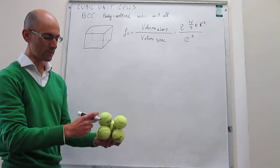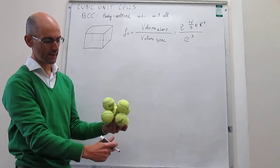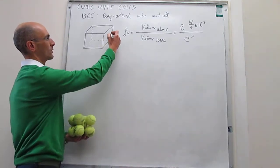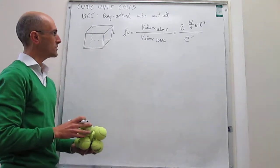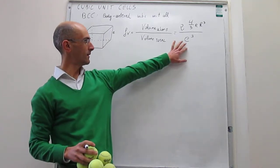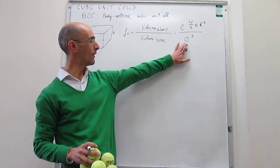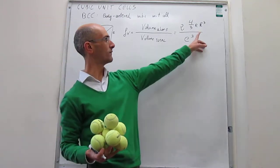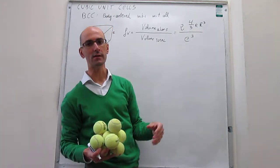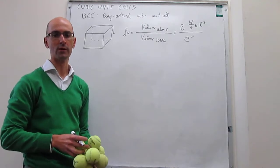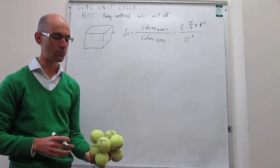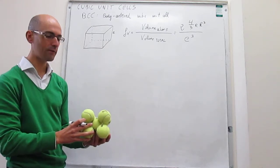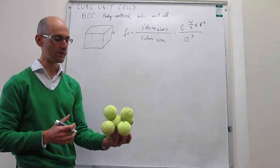The volume of the unit cell is the side length E cubed. However, we need to relate the side length of this cube to the radius of the atom so that we can cancel the r's and properly calculate the packing efficiency. Let's see how we can relate the radius of the atom to a geometric parameter of the unit cell.